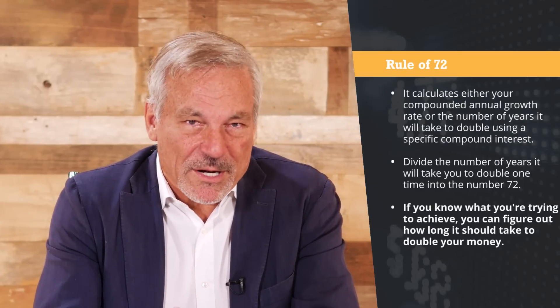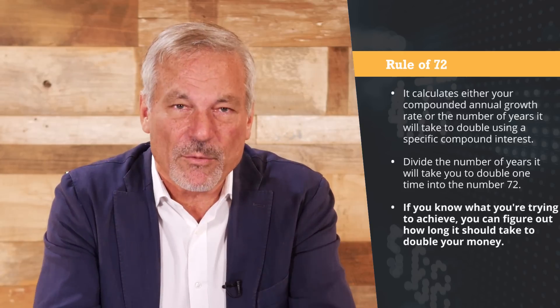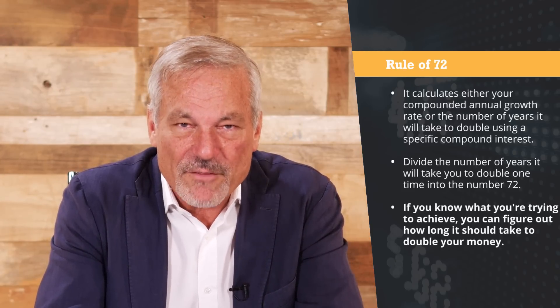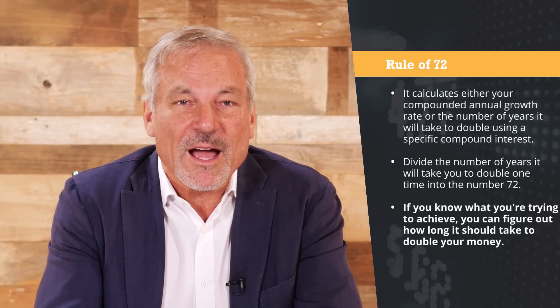Another way to think about it: if I know what I'm trying to achieve, I can figure out with the Rule of 72 how long it should take me to double my money. For example, if I'm targeting a 26% return compounded every single year, I divide 26 into 72 and it tells me how many years before I double my money — that's three years to take $10,000 to $20,000. If I expected to do it in five years, I divide 15 into 72 and it goes approximately five times, meaning it takes five years to double. And if I expected to double in six years, dividing six into 72 tells me I'll get a 12% compounded annual rate of return.